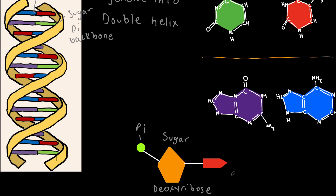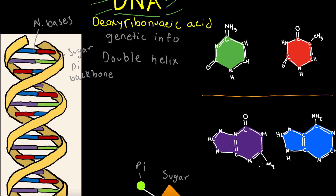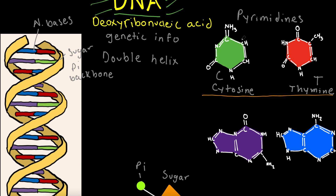This red structure is known as our nitrogenous bases. So what are nitrogenous bases? We have four different nitrogenous bases. The first is cytosine, also shown as C. The next one is thymine. Cytosine and thymine are part of a group called the pyrimidines. As you can see, pyrimidines have a single ring structure, as shown by cytosine and thymine.